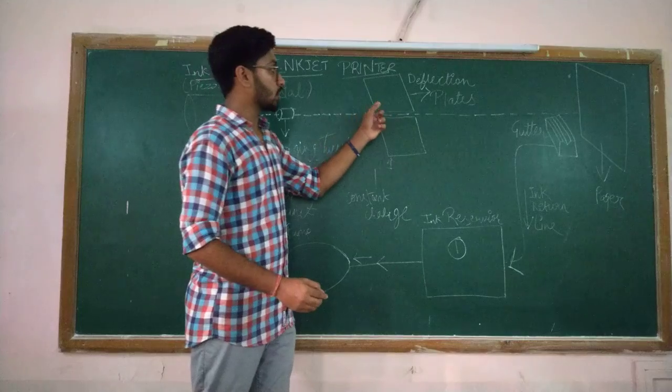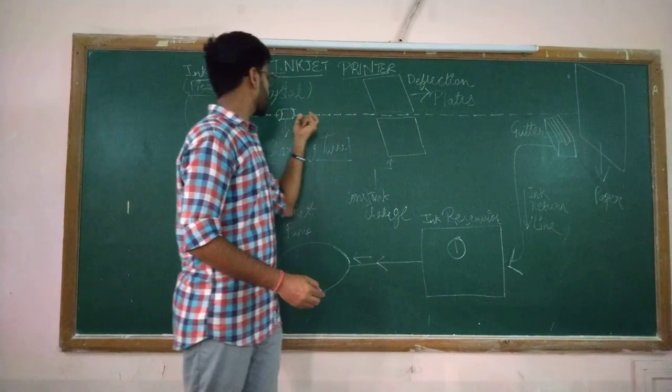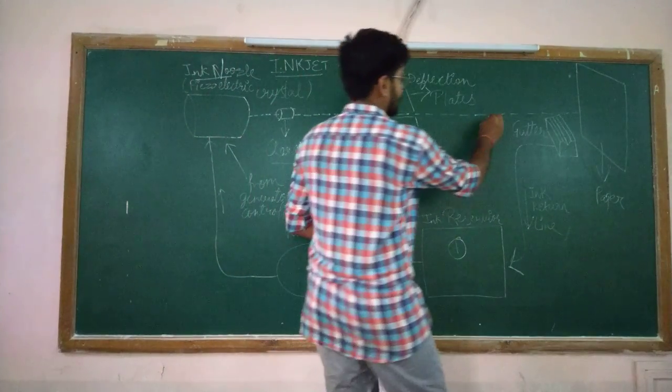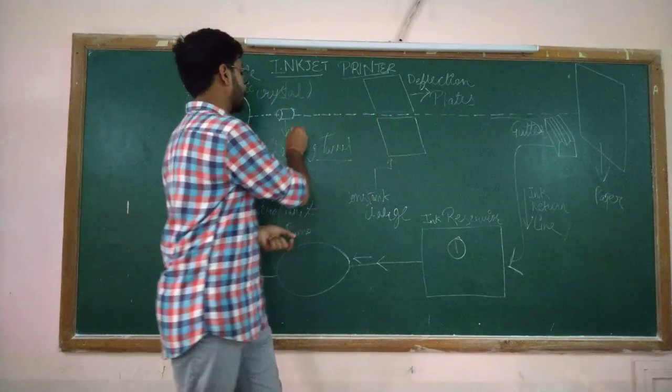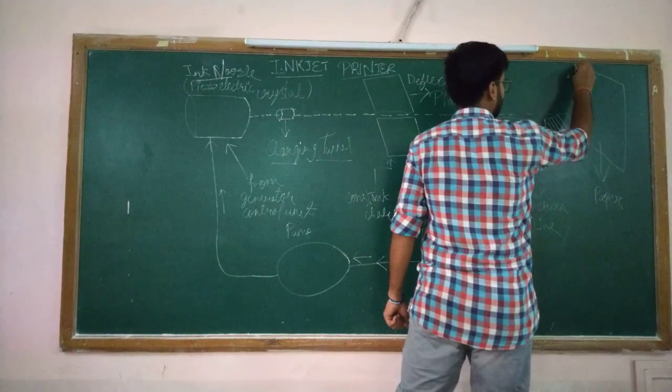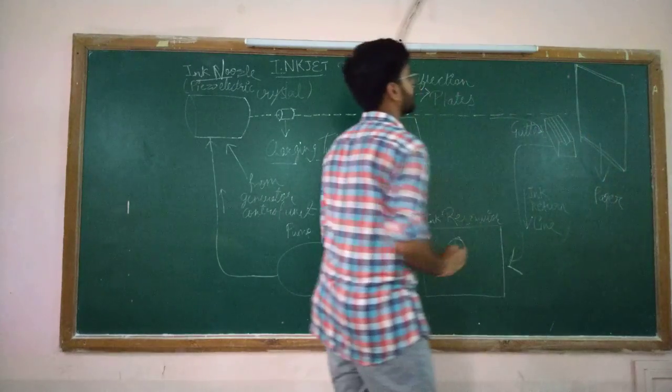In deflection coils, all the charged particles of the ink crystals are being diverted to the gutter and all the neutral particles which come out from the charging tunnel are being emitted on the paper where we want our output. This is the paper on which we get our output.